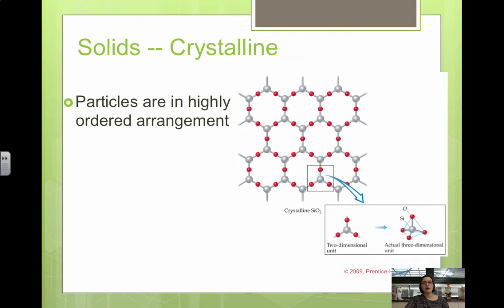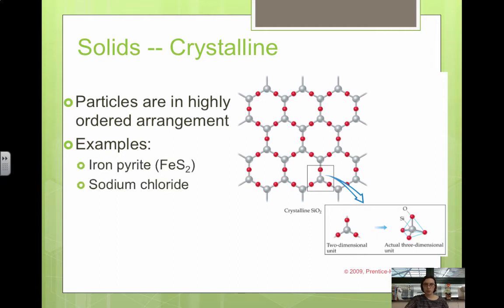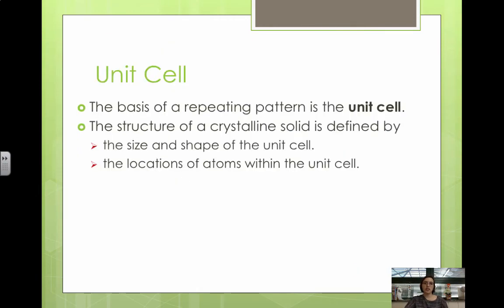With crystalline solids, in a crystal lattice the particles are highly ordered. Examples include iron pyrite (fool's gold), sodium chloride, and diamond. There is a small repeating unit in a crystalline solid called a unit cell, and the structure of the unit cell defines a lot of the properties. The structure of the solid is defined by the size and shape of the unit cell and where the atoms are positioned within it.